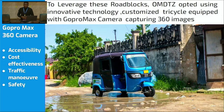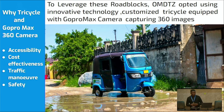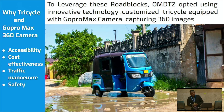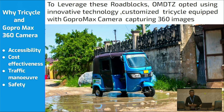To leverage these road blocks, Open Map Development Tanzania opted for using innovative technology, which is a customized tricycle equipped with a GoPro Max camera to capture 360 images. Why did we opt for this methodology? Because the GoPro Max camera first takes images with high quality, but also it is embodied with GPS, so once you have captured the image you just upload it directly to Mapillary.